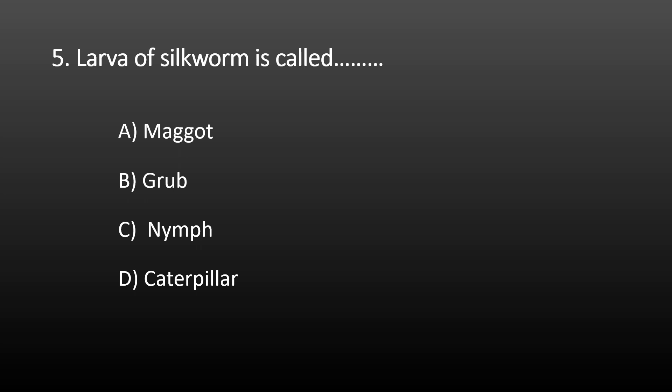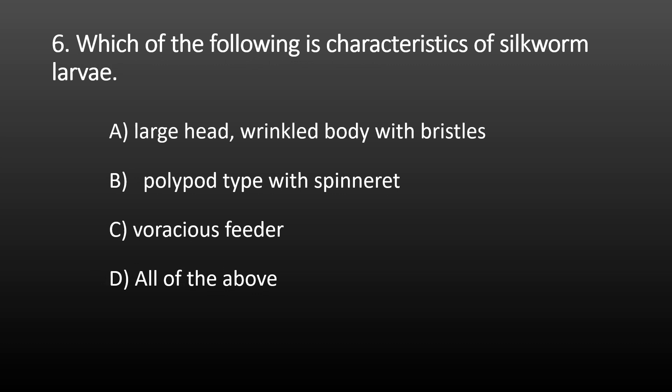Next MCQ: the larvae of silkworm is called? Options are: Maggot, Grub, Nymph, and Caterpillar. Maggot is the larva of Diptera, and Grub is the larva of Coleoptera, so these two options are incorrect. The nymphal stage is found in hemimetabolous insects with only three developmental stages. The correct option is Caterpillar. All Lepidopteran larvae are called Caterpillar, and silkworm belongs to the order Lepidoptera.